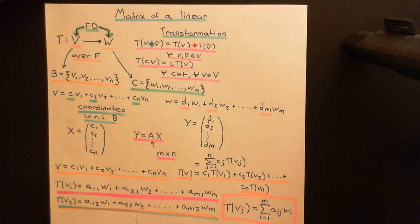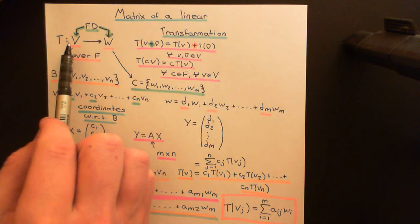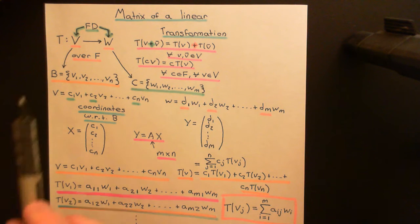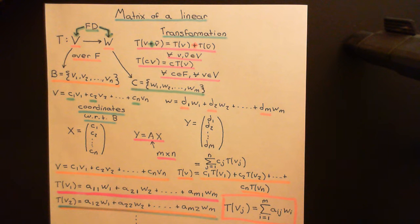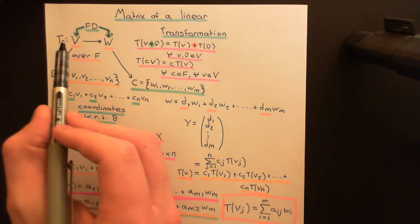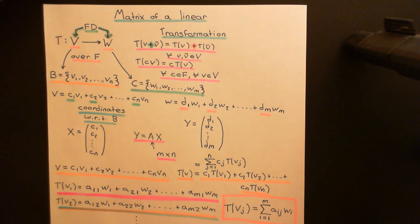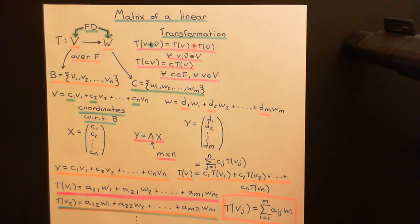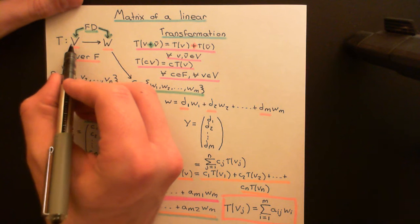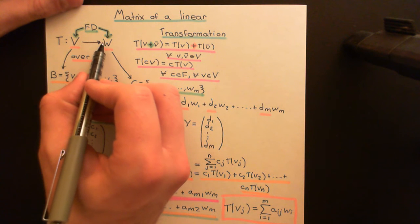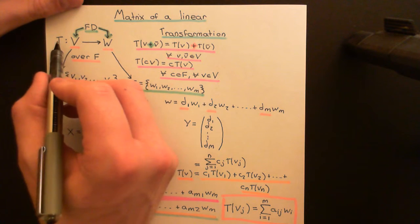Welcome back to this next video in which we are discussing the matrix of a linear transformation. In the previous video, we saw that if we have a linear transformation T mapping one vector space V onto another vector space W, where both are finite dimensional and over the field F, then given a basis B for V and a basis C for W, it is possible to describe the linear transformation with a matrix. This matrix multiplies coordinate vectors of vectors in V and turns them into coordinate vectors of the corresponding vectors in W.